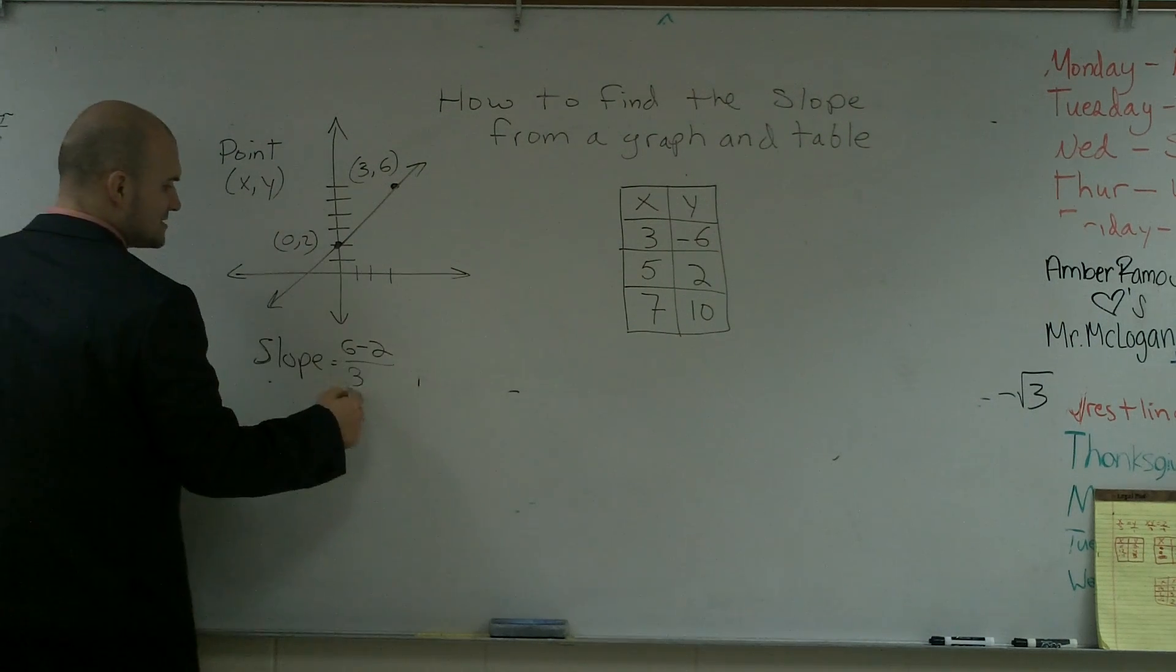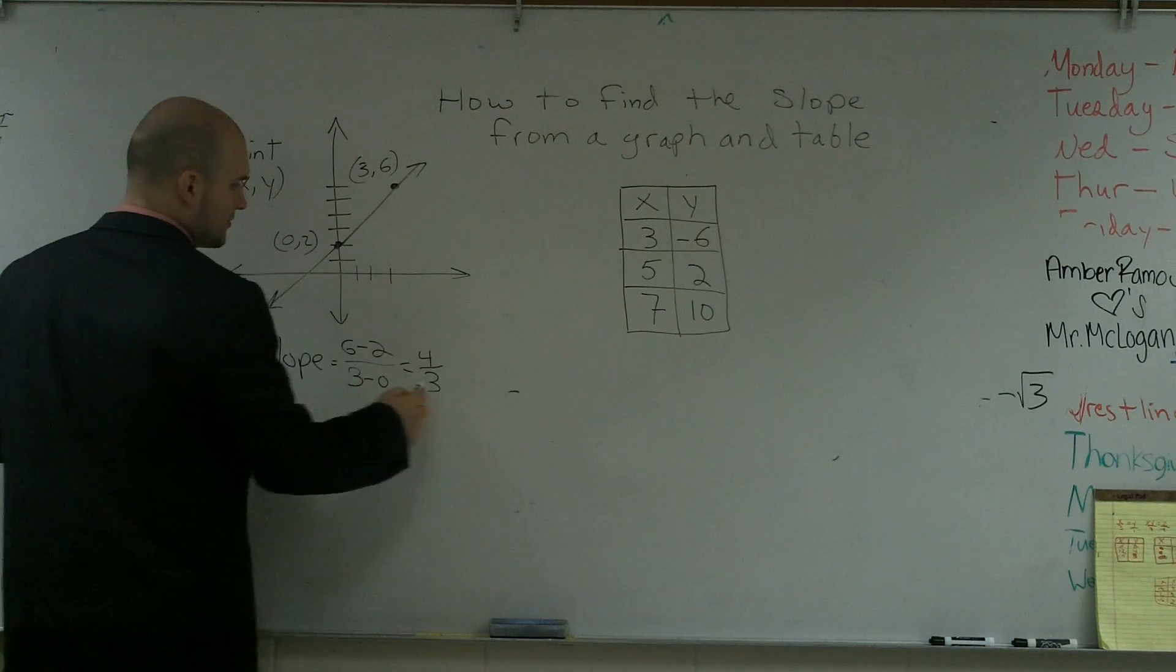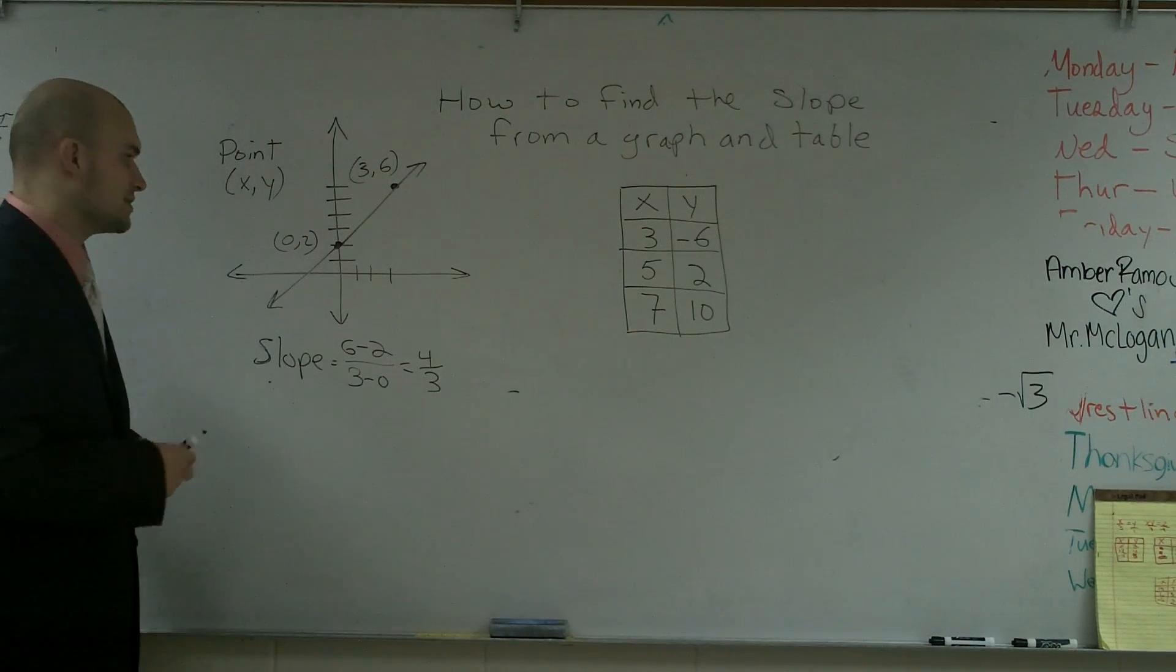The change in y is 6 minus 2, because we're going to find the difference between those two, and then 3 minus 0 equals 4 over 3. Therefore, the slope for this line is 4 thirds.